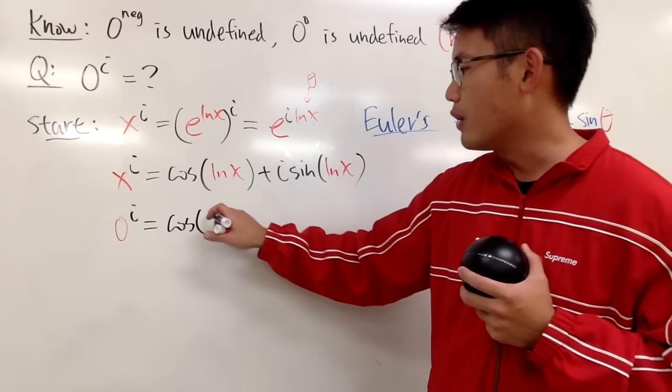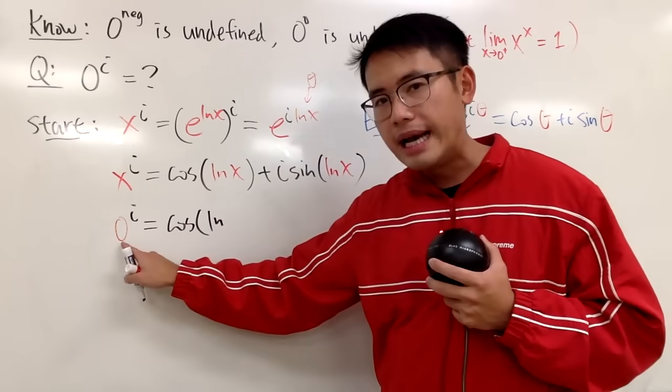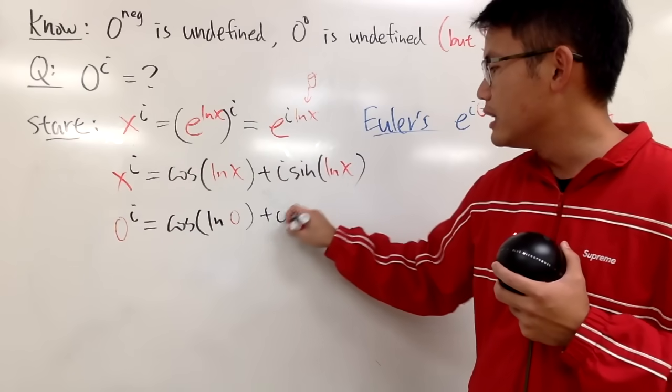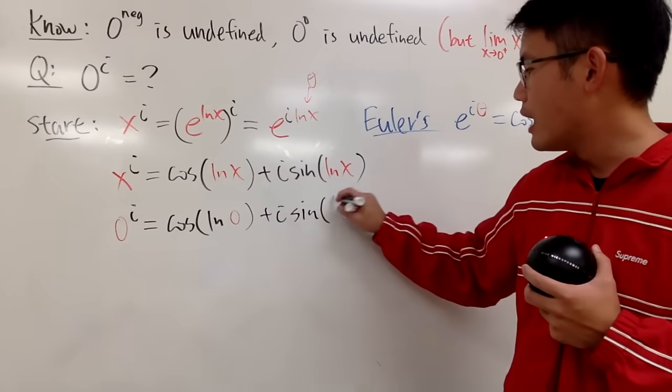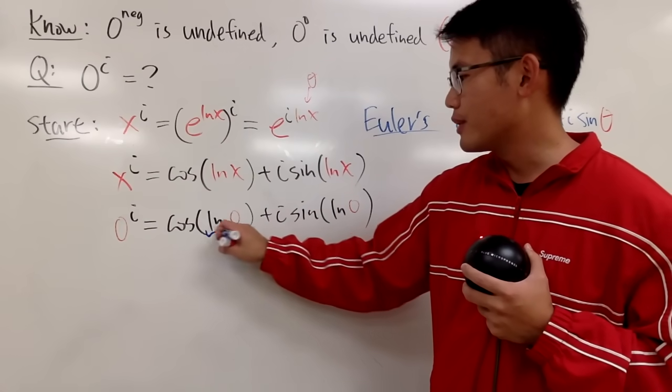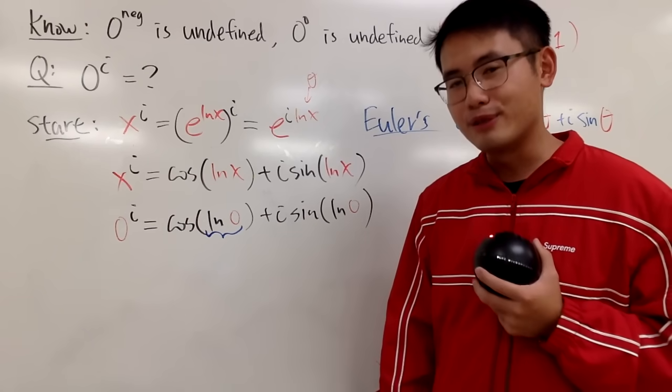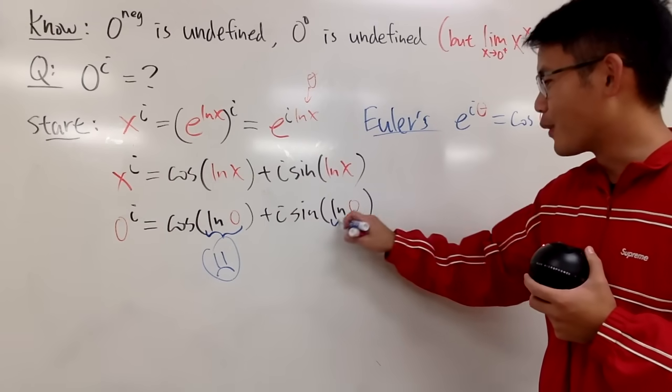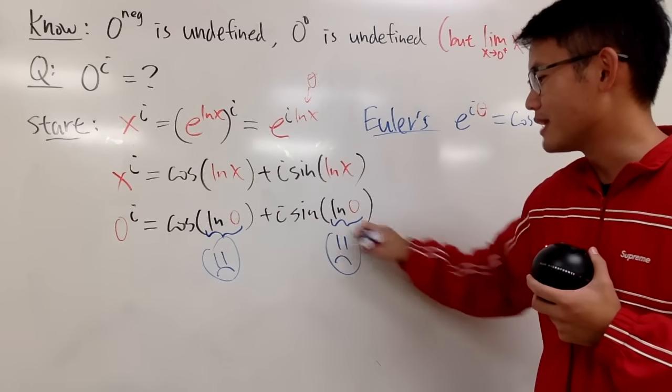This is just going to be cosine of ln, and the x value is 0 like this, and then we add it with i times sine of ln of 0. Here's the question. What is ln of 0? ln of 0, unfortunately, it's not defined. Of course, this is also ln of 0, so this is not defined.